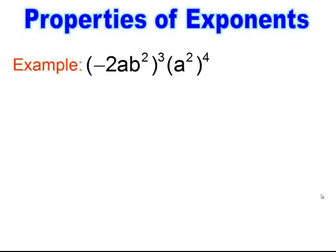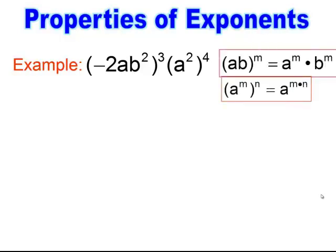Now I have a combination, multi-step operation of exponents or properties of exponents. The first thing we need to do is the power to the power, or the power to the quantity property. So we have power to a quantity, and we have power to a power. I have to first simplify piece by piece.